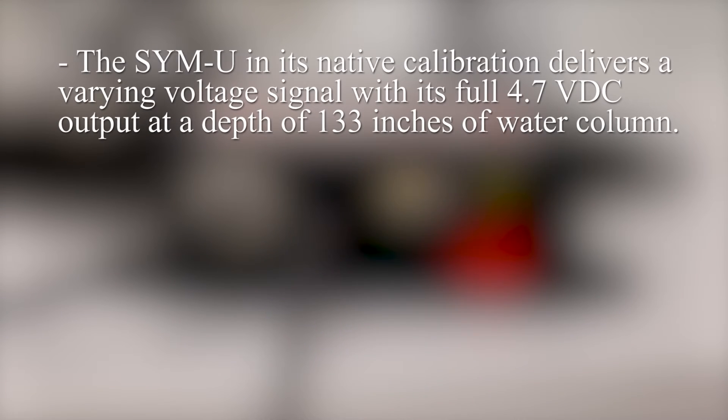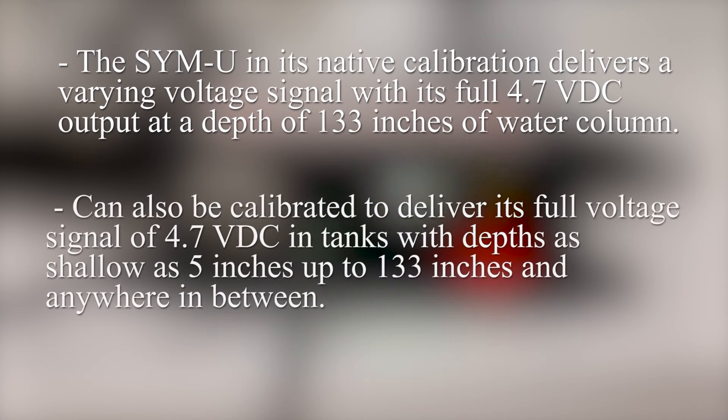The SIM-U in its native calibration delivers a varying voltage signal with its full 4.7 VDC output at a depth of 133 inches of water column. It can also be calibrated to deliver its full voltage signal of 4.7 VDC in tanks with depths as shallow as 5 inches and be calibrated anywhere from 5 inches to 133 inches.